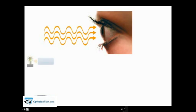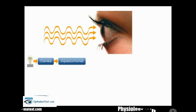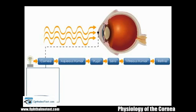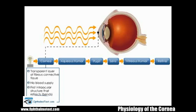Light enters the eye through the cornea, subsequently traveling through the aqueous humor, pupil, lens, and vitreous humor, before reaching the retina at the back of the eye. The cornea is a transparent layer of fibrous connective tissue that has no blood supply. The cornea is the first intraocular structure that refracts, or bends, light rays.